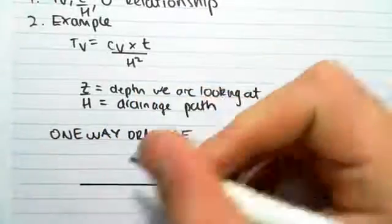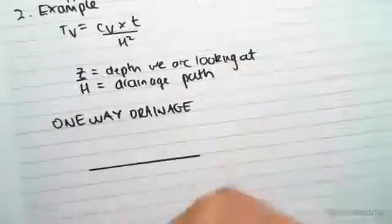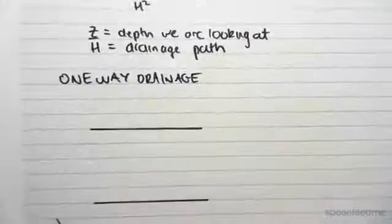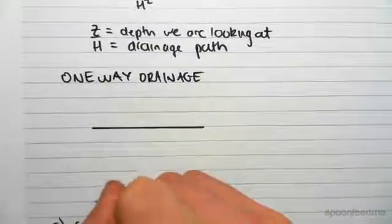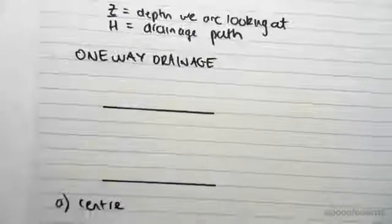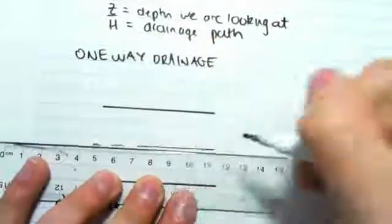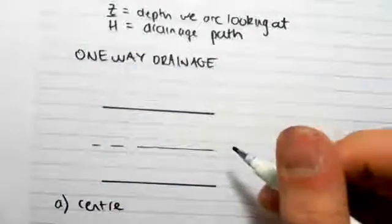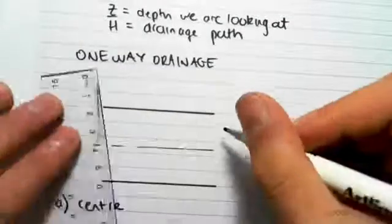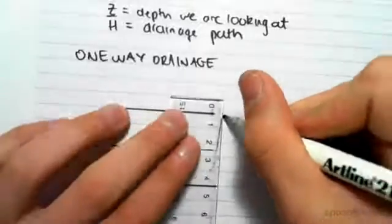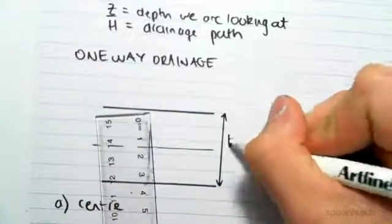Okay, so we have a one-way drainage case. Let's say that we are looking first at a point which is at the centre of the layer, the centre of this layer, over around there. If this was, because it's one-way drainage, that total distance is H.